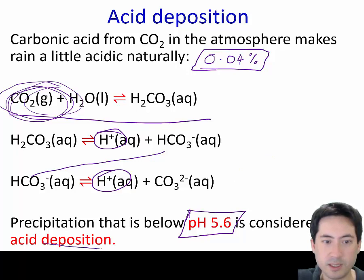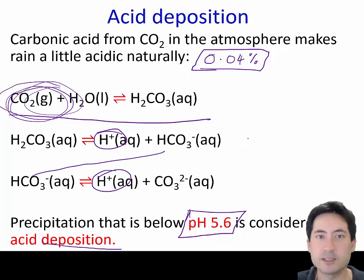We don't use the term acid rain because the acid could form directly on leaves and in other forms of precipitation, not just rain, so it's acid deposition.